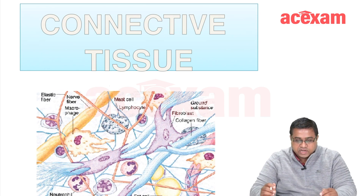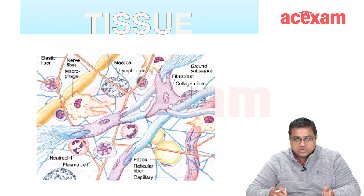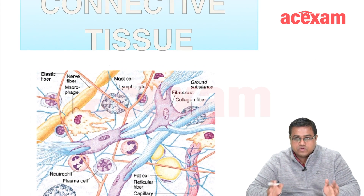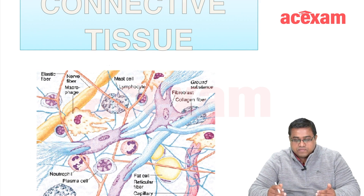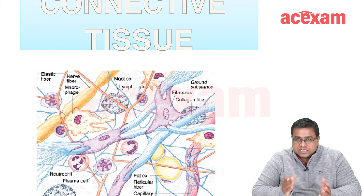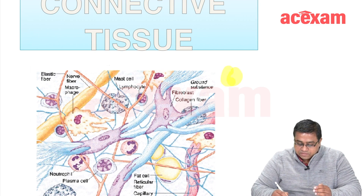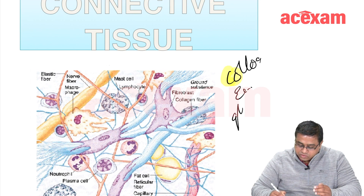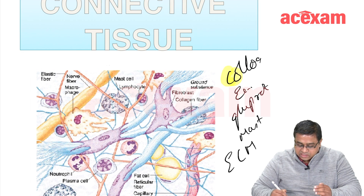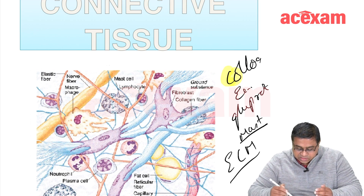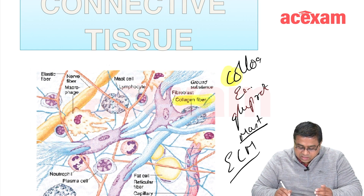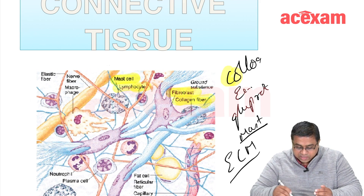Hello everyone, today we will be discussing connective tissue and related disorders. Connective tissue is the most abundant tissue in the human body, serving as supportive tissue for cells and organs. Its major components are collagen, elastin, glycoproteins, and a few cells present in the extracellular matrix such as mast cells. Collagen fibers, fibroblasts, mast cells, and lymphocytes all constitute connective tissue.